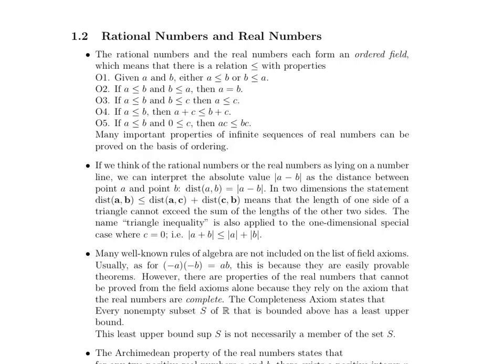Let's continue our discussion of the rational and real numbers. First of all, the rational numbers and the real numbers each form an ordered field, which means that there is a relation, less than or equal to, with the following properties.